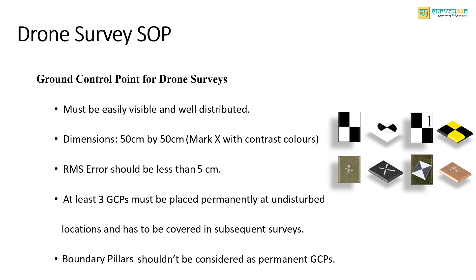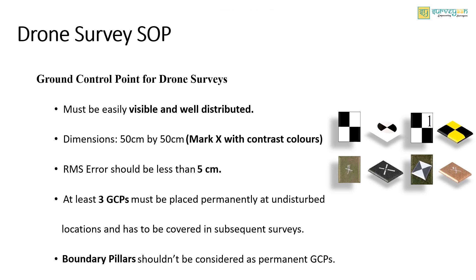Each mine must establish at least 5 GCPs per square kilometer of lease area with a certified DGPS instrument before undertaking the drone survey. If the area is less than one square kilometer, only 4 GCPs are needed. Points to note while placing GCPs: they must be easily visible and well distributed all over the area. The dimensions of the GCP should be a minimum of 50 cm by 50 cm, and you need to mark an X or cross with contrasting colors so that it is visible in the photos. RMS error should be less than 5 centimeters. At least three GCPs must be placed permanently at undisturbed locations and covered in subsequent surveys to cross-check error. Finally, boundary pillars should not be considered as permanent GCPs.